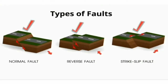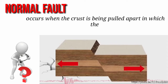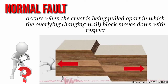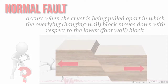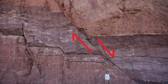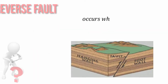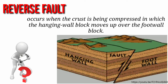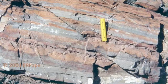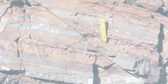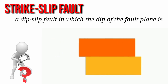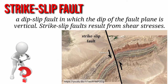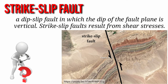There are three types of faults: the normal fault, reverse fault, and the strike-slip fault. A normal fault occurs when the crust is being pulled apart, in which the overlying block moves down with respect to the lower block. A reverse fault occurs when the crust is being compressed, in which the hanging-wall block moves up over the foot-wall block. A strike-slip fault refers to a fault in which the dip of the fault plane is vertical. Strike-slip faults result from shear stresses.